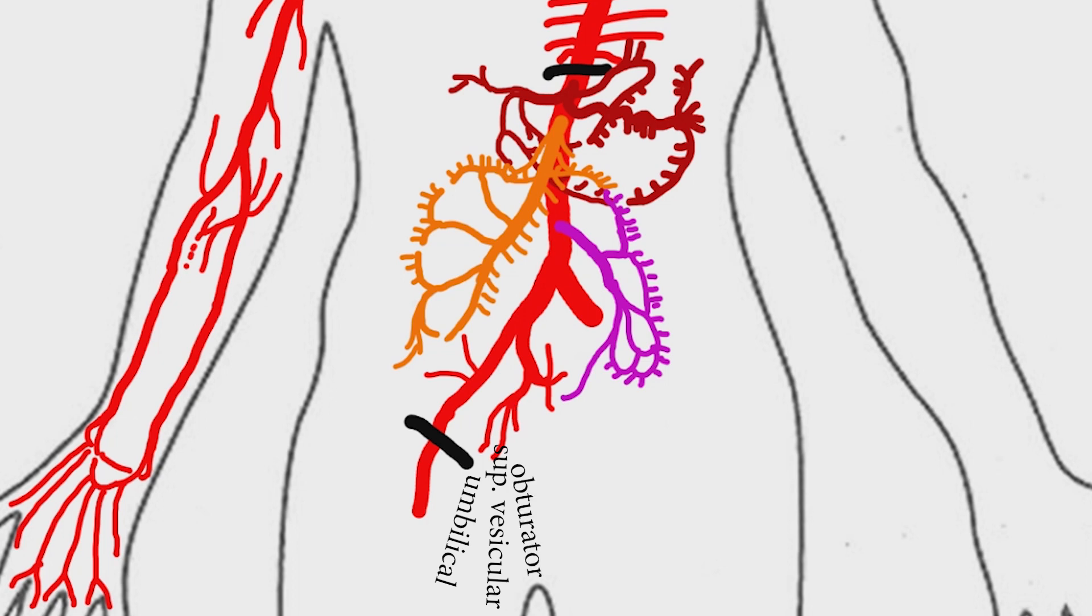obturator artery, inferior vesicular artery in male or vaginal artery in female, middle rectal artery, internal pudendal artery, and inferior gluteal artery. In females there is an additional branch called uterine artery.